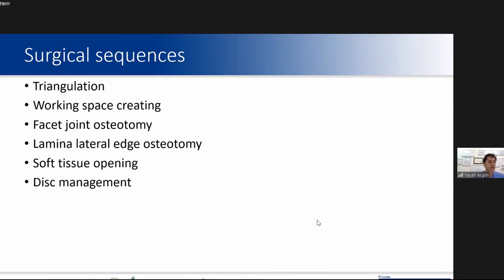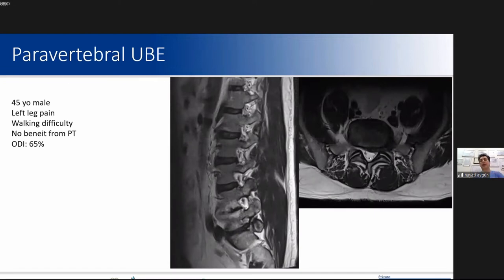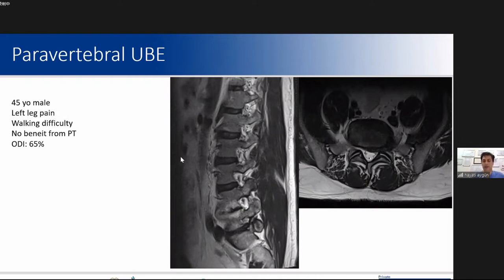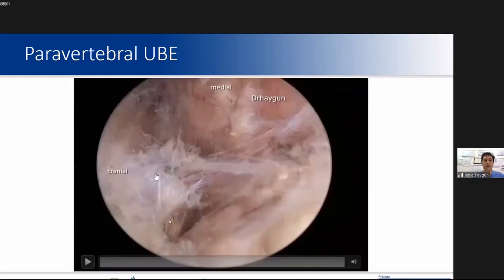The surgical sequences are: triangulation, working space creation, facet osteotomies, laminar lateral edge osteotomy, then soft tissue opening and disc management. We will see all the sequences in a case. This patient was a 45-year-old male who had severe left leg pain, working difficulty, and couldn't benefit from physical therapy. He had very severe pain clinically.